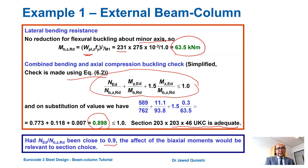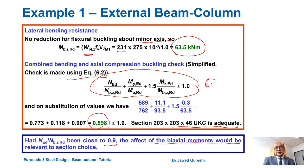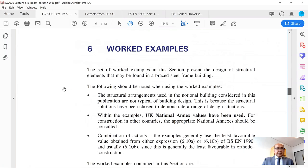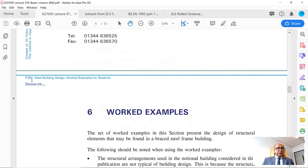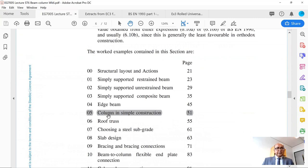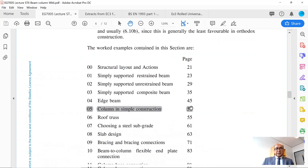Now I will move to the second example, again using equation 6.2. This second example is taken from P387 Steel Building Design: Worked Examples for Students. I am solving example 5 — column in simple construction.